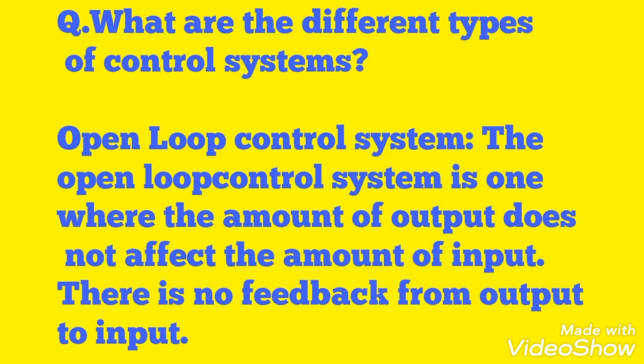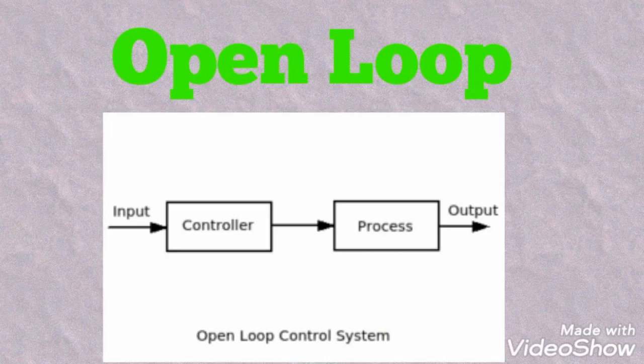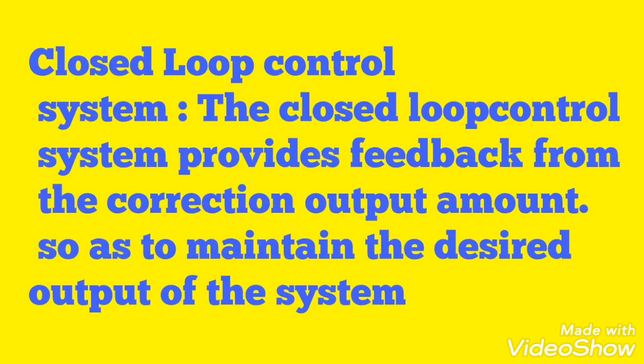There are two different types of control system. The first is the open loop control system. In the open loop, the amount of output does not change the amount of input, so there is no feedback from output to the input. The input goes to the controller, the controller changes the process, and the output is changed, but no feedback is used.